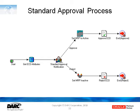If we follow the approved branch, we will then set the MRP flag to active, which lets MRP start to plan for this change, and it will then set the ECO approval status to approved. One of the common requests is that we send a notification out to interested parties that the ECO has been approved.